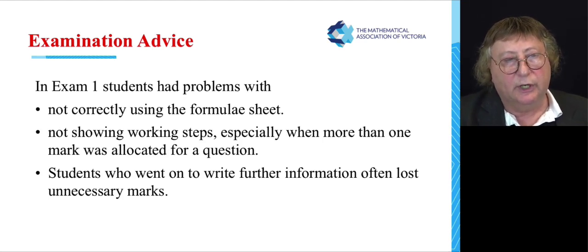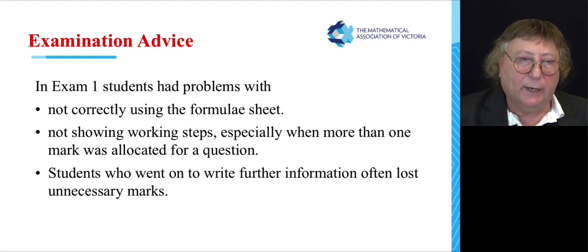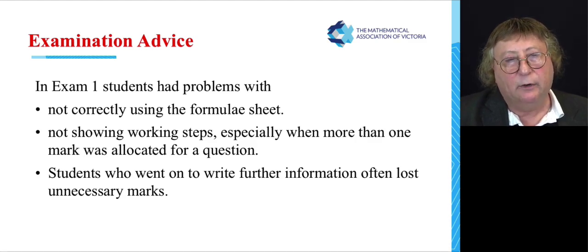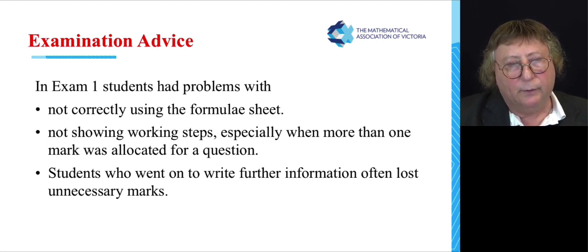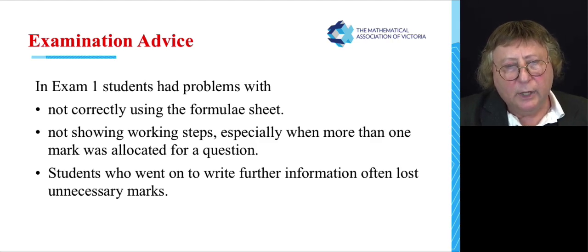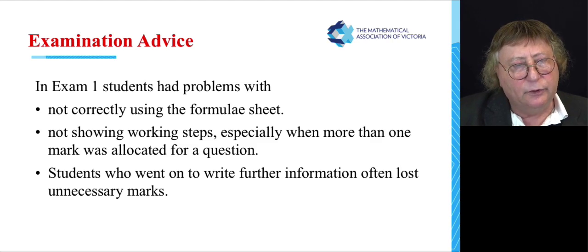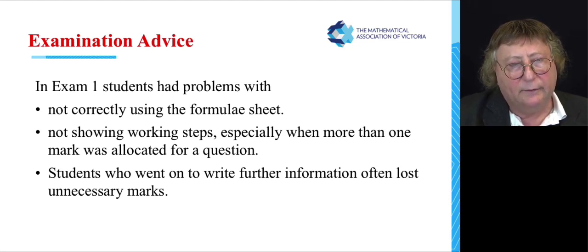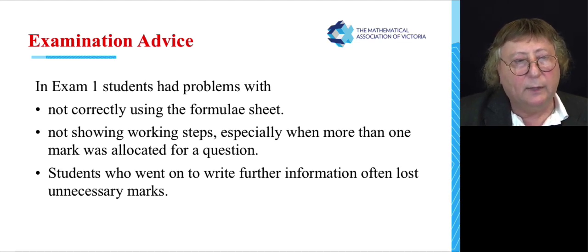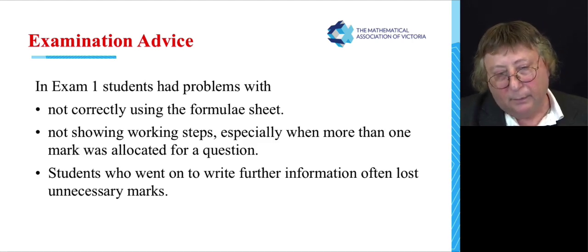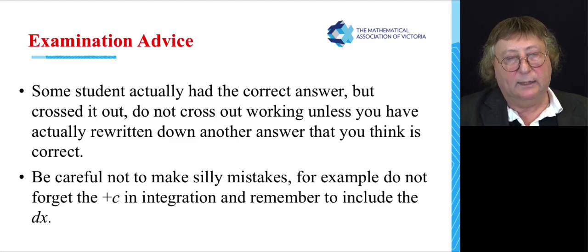Now in exam one, if you read the examiner's reports, which I strongly suggest you do, students always have problems with not correctly using the formula sheet. For example, if you have to use a quotient rule, as in math methods, make sure you use it correctly - the derivative of the top times the bottom minus the other way around. Not showing steps. Now, in an exam, if a question says show that and it's worth more than one mark, then make sure you really put in some extra steps. Because you really need to show some working when working is required, when questions are worth more than one mark. Don't necessarily have to simplify an answer fully, and if you do go on and simplify an answer fully and get it incorrect, and that's your final answer, then you will lose unnecessary marks. So you don't have to simplify, factorise your final answer in exam one. But often they will ask you to give your answer in a particular form, so you might have to give it in that form, which may require some sort of factorisation.